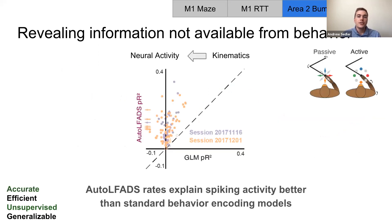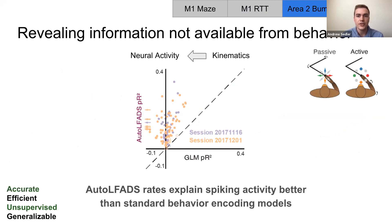In sensory areas like area two, it's common to fit behavior to neural activity using a behavioral encoding model. We show that the rates inferred by auto LFADS explain the observed spikes much better than a GLM for all neurons across two recording sessions. This shows that auto LFADS is capturing a lot of information that isn't contained in the behavioral data. Auto LFADS out of the box was highly successful in modeling a highly input-driven brain area with very different statistical and dynamical properties from the motor cortex.